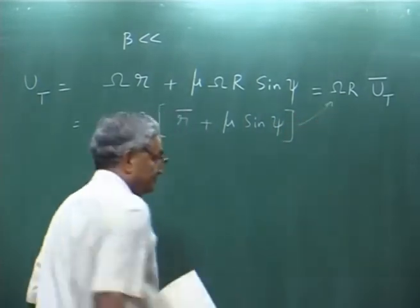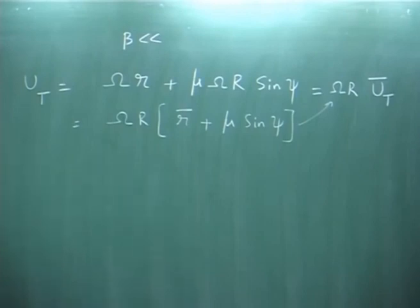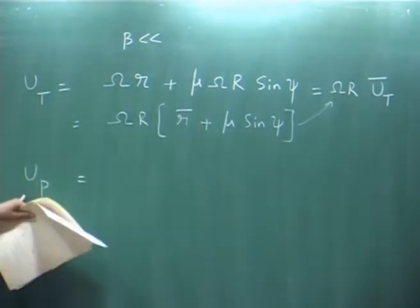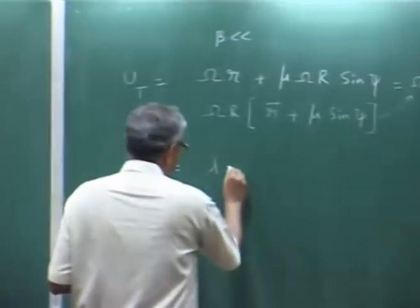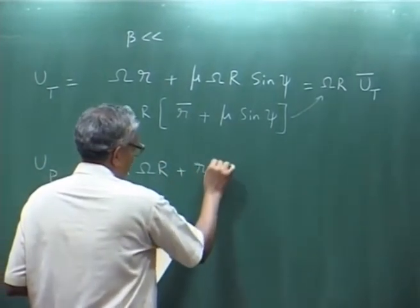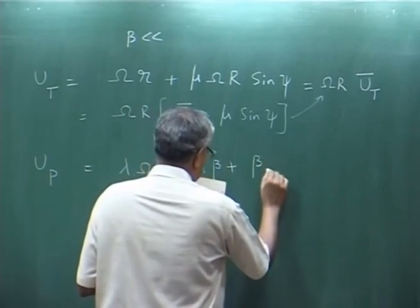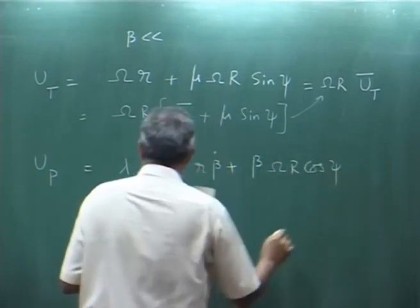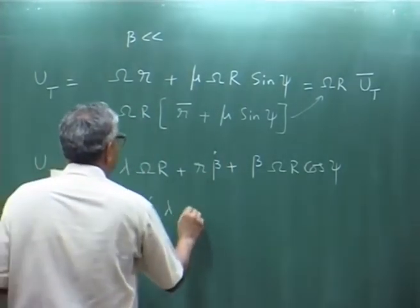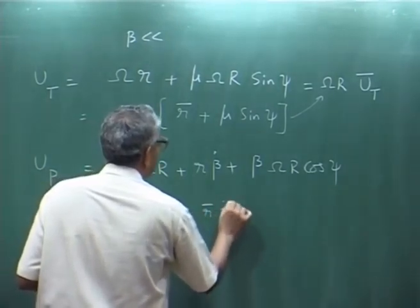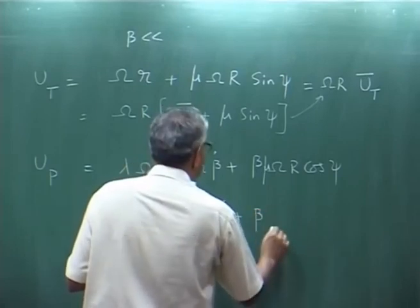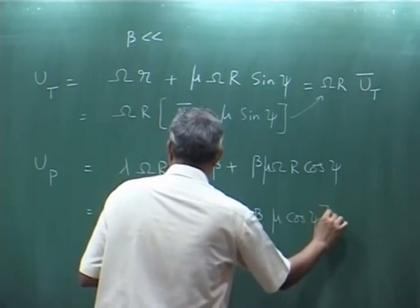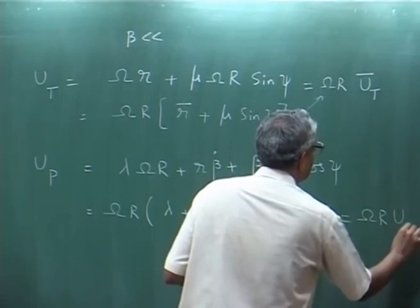This is basically symbolic, because the non-dimensional u_t — I will use u_bar_t everywhere. Similarly, going to u_p: u_p is actually minus... u_p becomes lambda*omega*r plus, which you write as omega*r times (lambda plus mu*beta*sin(psi)), which we call omega*r * u_p_bar.